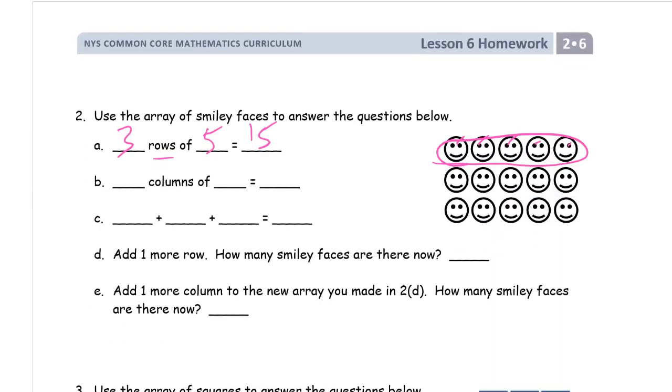And if we're looking at columns, columns go up and down. How many of those are there? There's five. There's five columns, and there's three in each column, and that's 15. So, that's five columns of three.